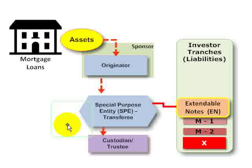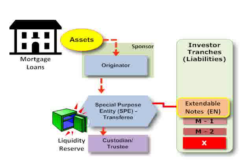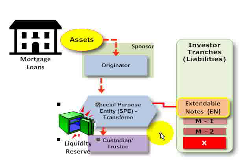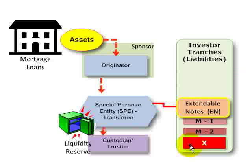The second type of internal liquidity support is the use of a liquidity reserve, which is much like the cash collateral account seen under credit enhancements. This would typically be funded by cash from the waterfall. The cash flow waterfall puts money into the liquidity reserve, and that reserve can be used to handle some of the liquidity mismatches. So we've now seen the two primary types of internal liquidity support: first, design of the liabilities; and second, the use of the liquidity reserve.